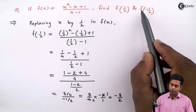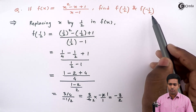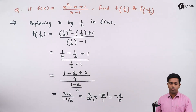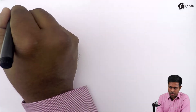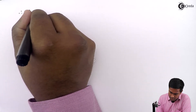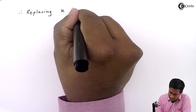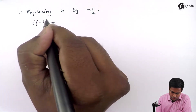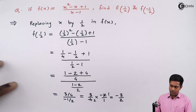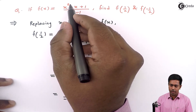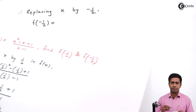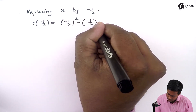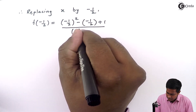Similarly we will solve it for f of minus 1 by 2. To get the value of f of minus 1 by 2, I will replace x by minus 1 by 2 on the left hand side as well as the right hand side. So therefore replacing x by minus 1 by 2, we get f of minus 1 by 2 equal to: x squared is replaced by minus 1 by 2 squared, minus minus 1 by 2, plus 1, upon minus 1 by 2 minus 1.